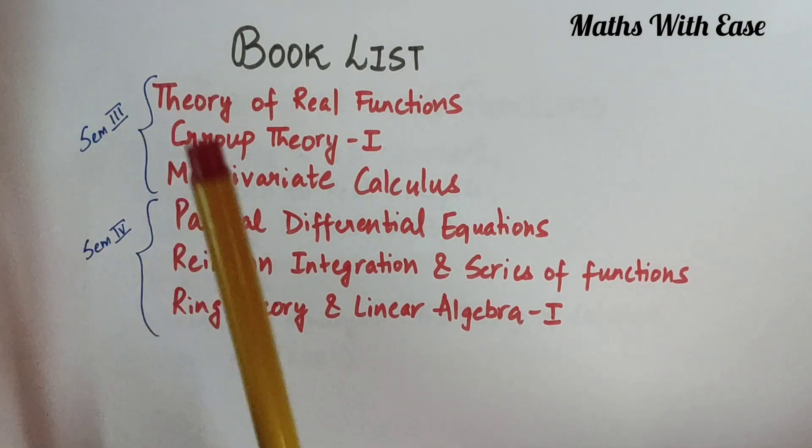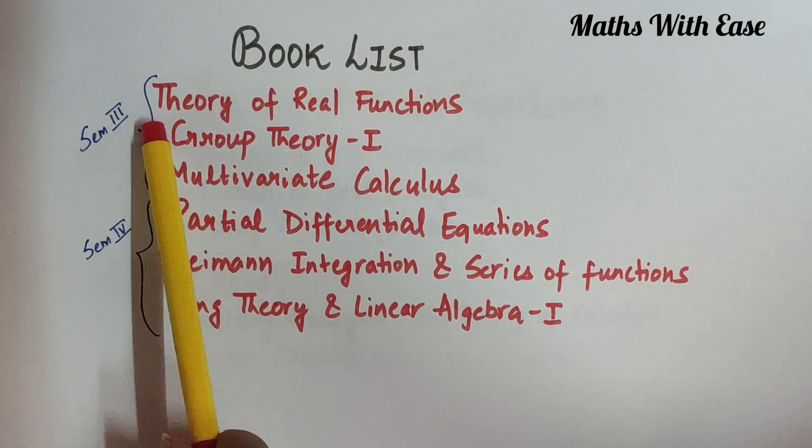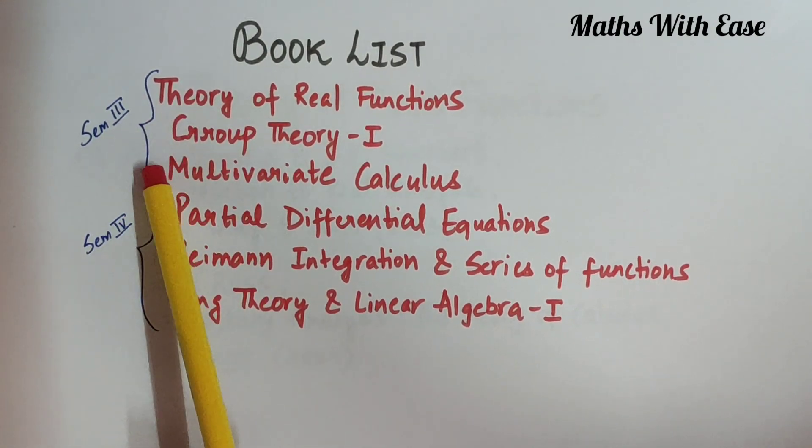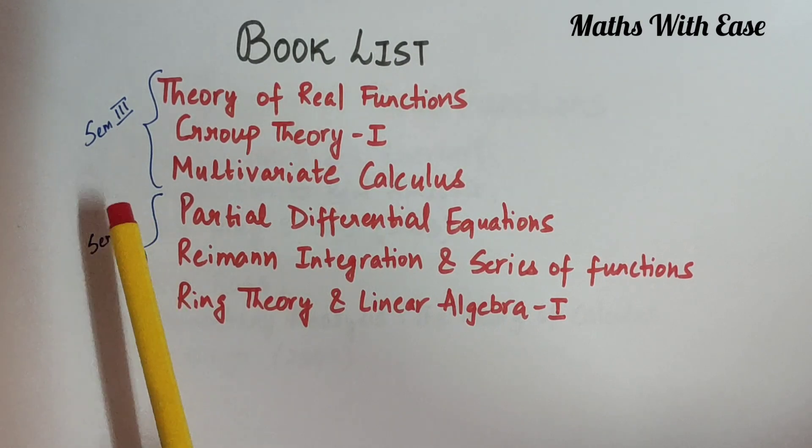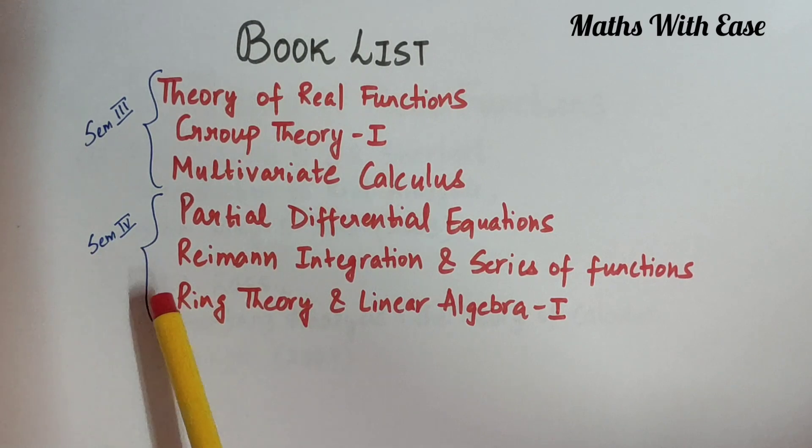In semester 3, we have 3 core subjects which are Theory of Real Functions, Group Theory 1, and Multivariate Calculus. In semester 4, we have 3 core subjects which are Partial Differential Equations, Riemann Integration and Series of Functions, and Ring Theory and Linear Algebra 1. I am going to share the complete books that you can refer for all these 6 subjects.